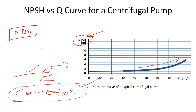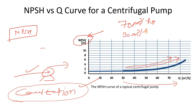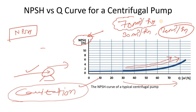From the NPSH curve, as you increase the flow rate, the required NPSH also increases. Conversely, as you reduce the flow rate, the NPSH drops. For example, if your normal flow rate was 70 m³/hr and you suddenly reduce it to 30 or 20 m³/hr, there is a question about the possibility of cavitation. This is a good troubleshooting topic — we have covered related videos in our centrifugal pumps playlist.